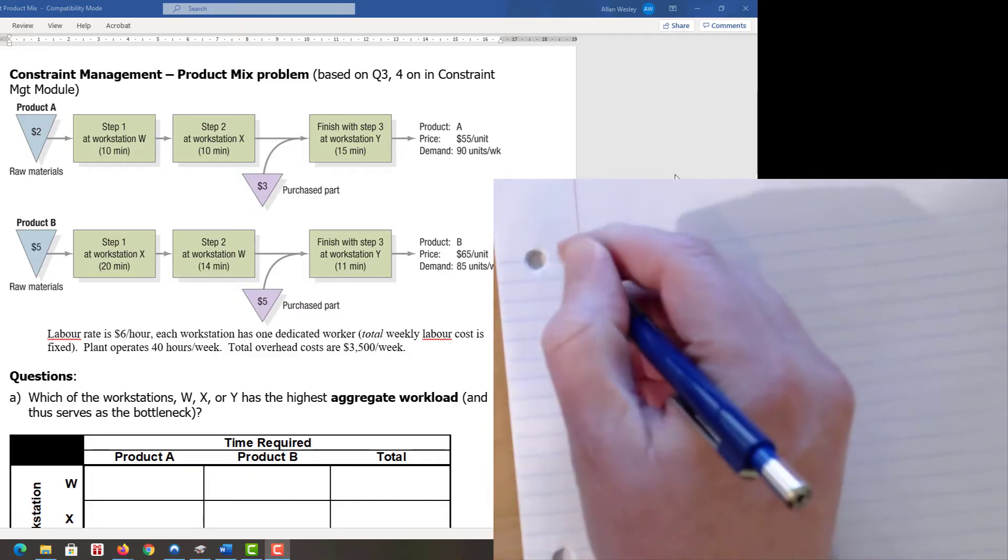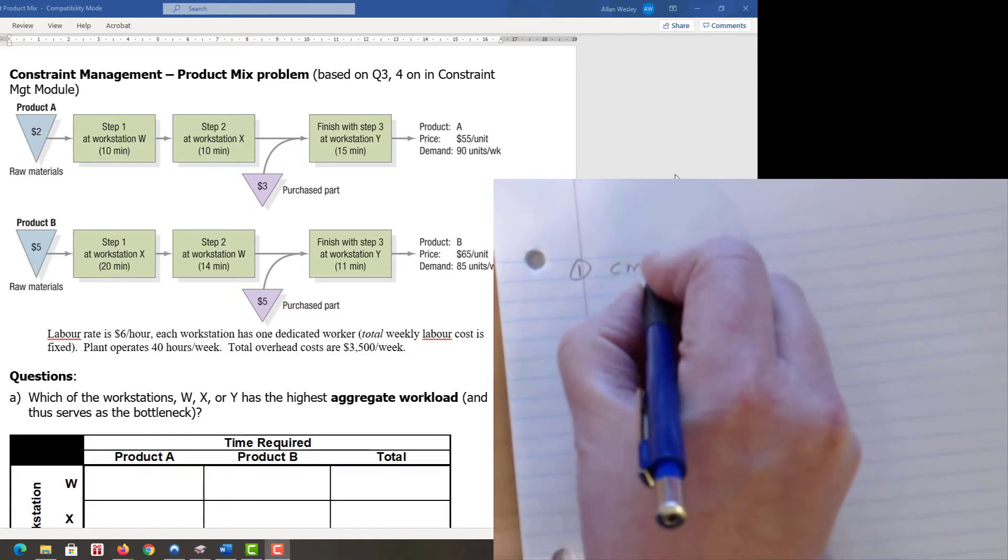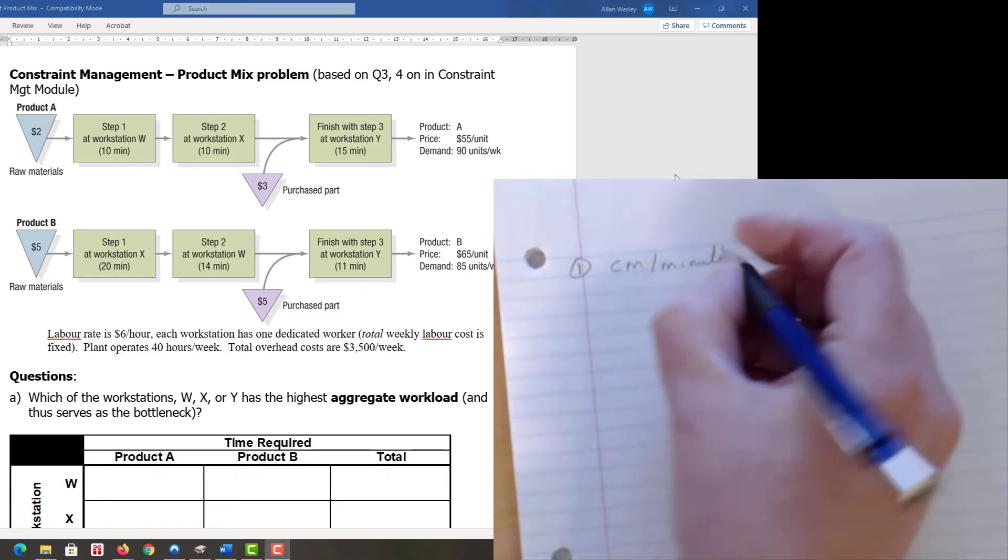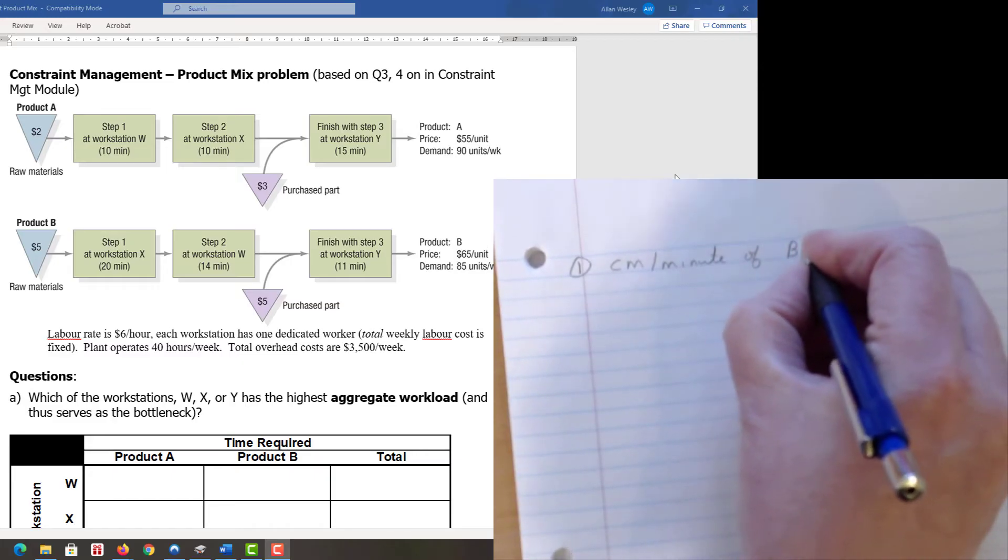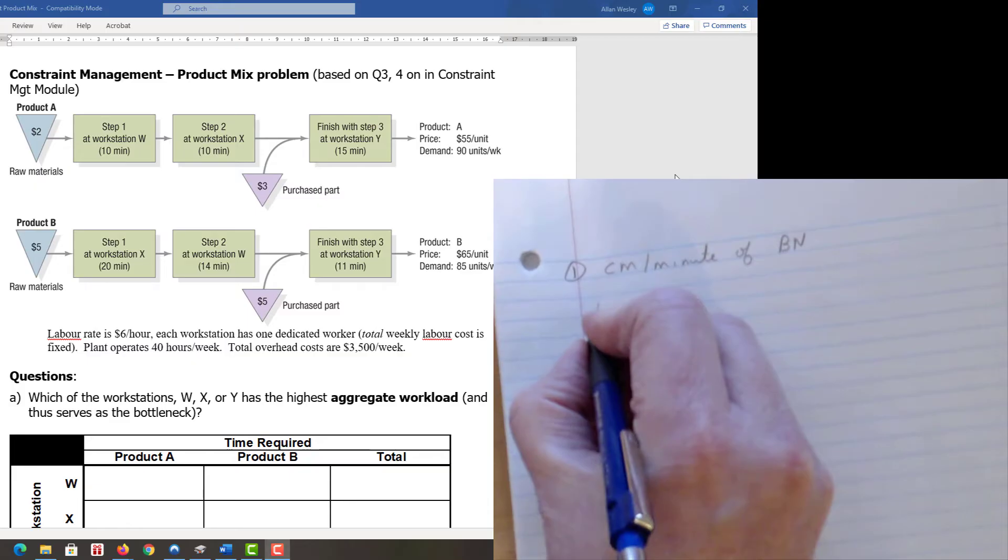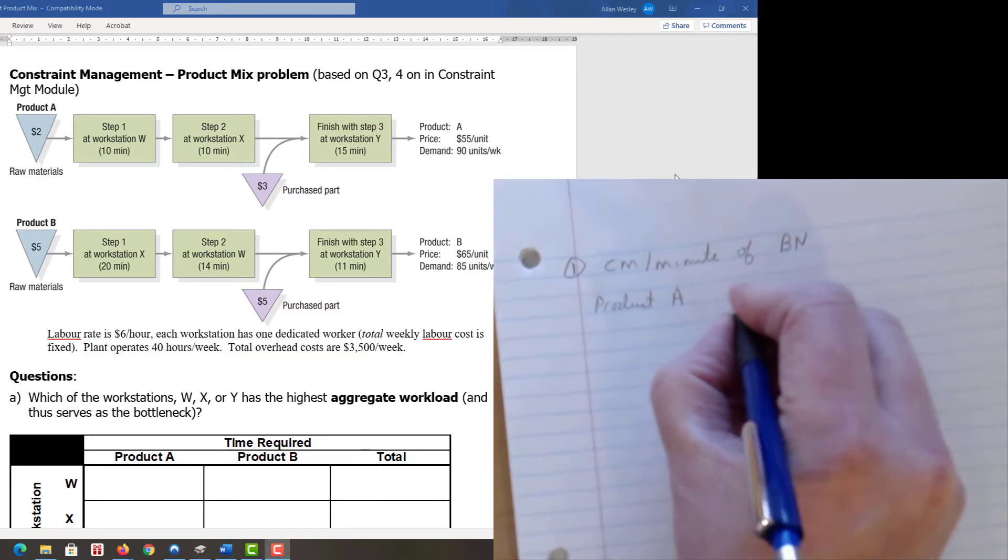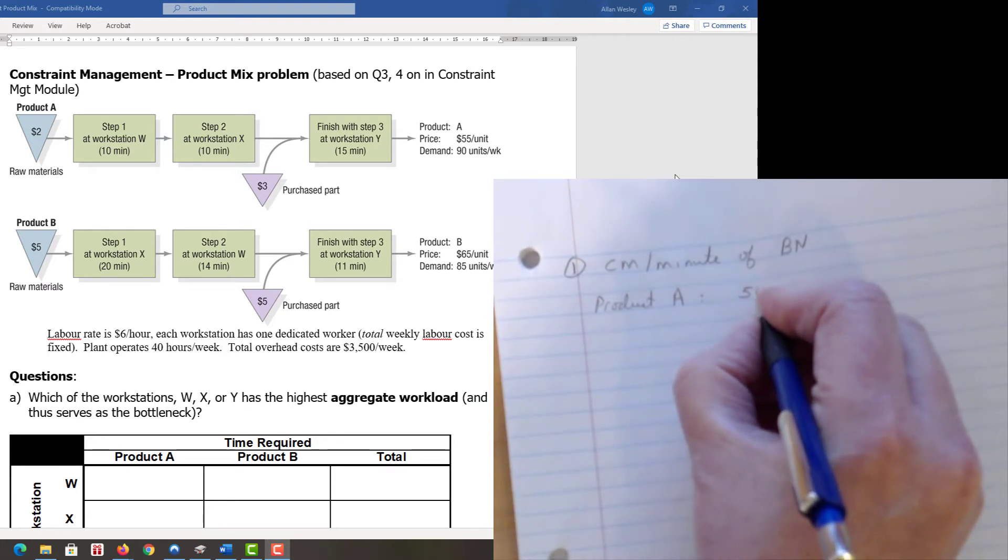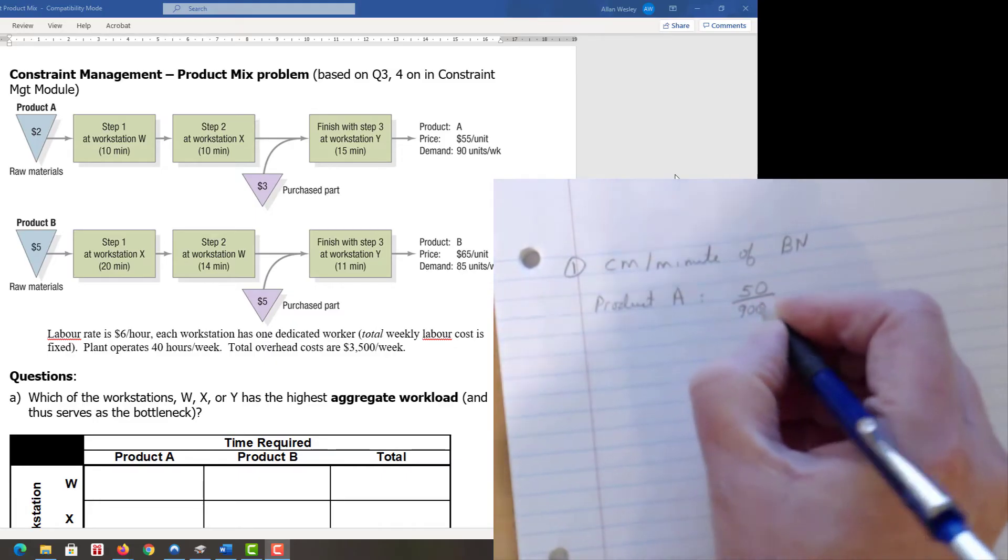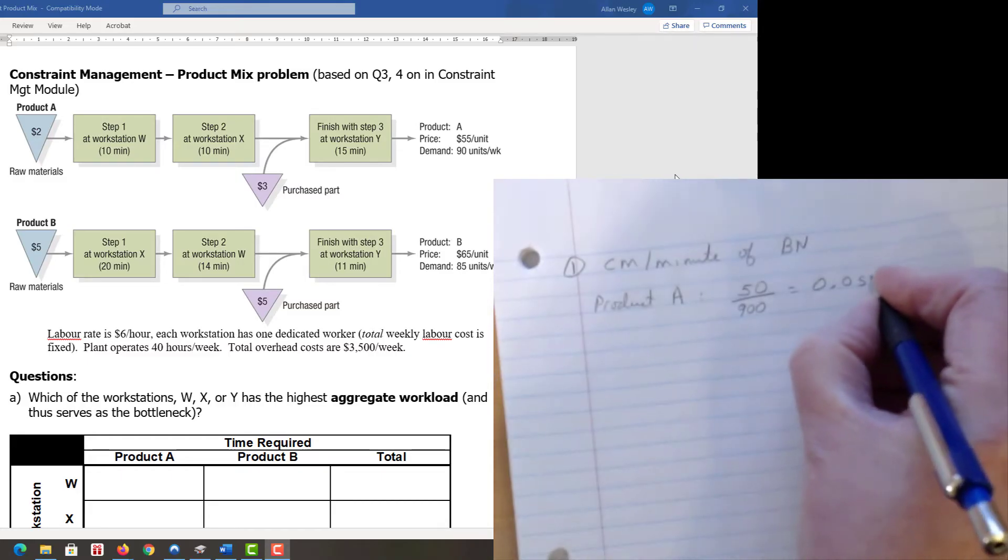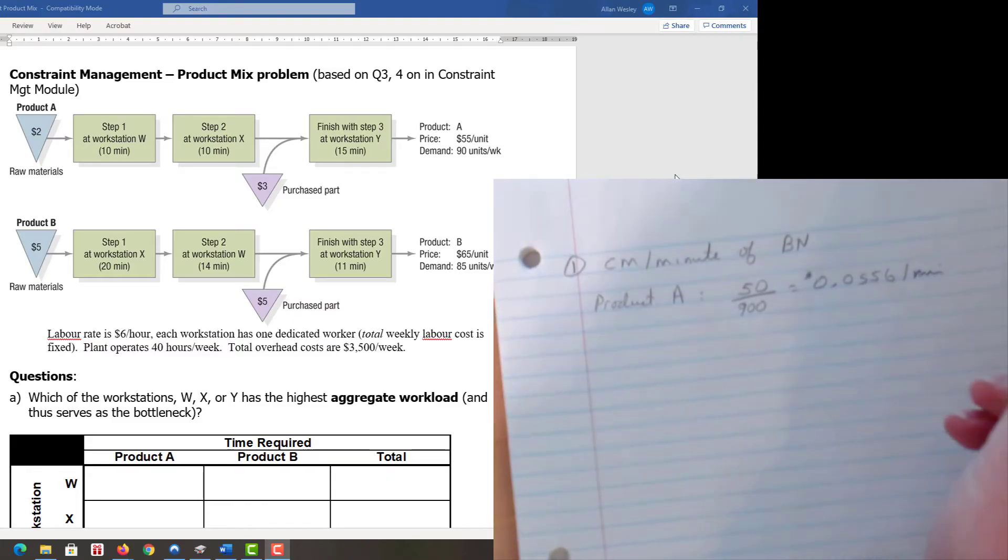We have a four-step process from the slides. Step one is to find the contribution margin per unit of the bottleneck. For product A, the contribution margin was 50 dollars divided by the 10 minutes product A consumes, giving us 0.0556 dollars per minute.